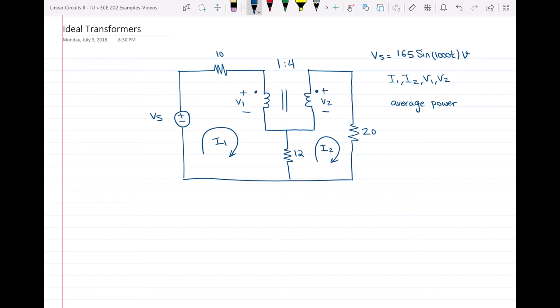In order to find the average power clearly I should have the current passing through them or the voltage across them. Having I1, I2, V1 and V2 being calculated first will help us doing that. I have four unknowns which are V1, V2, I1 and I2. Clearly I need four different equations because I have four unknowns and then I can solve them and find these four unknown variables.